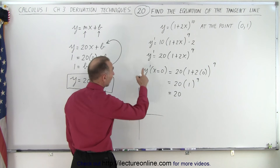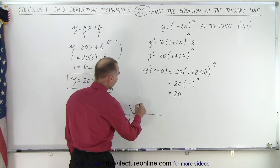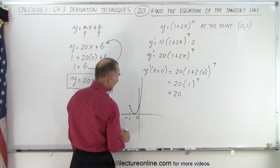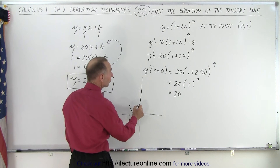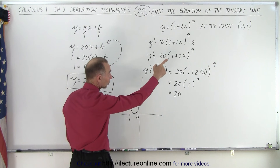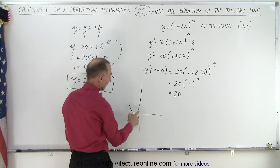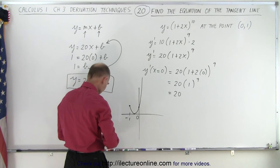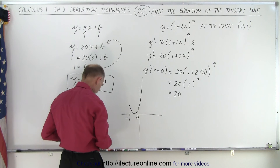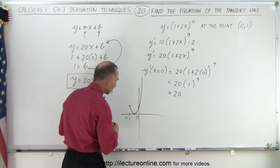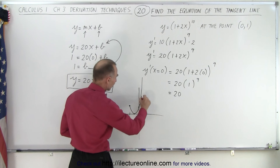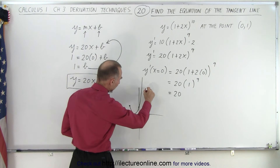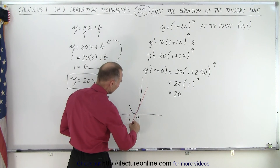So the function looks like this. And you can see that as x gets bigger, the slope gets very quickly very steep. Notice that we're looking for a line that is tangent to the function at x equals 0. I'll go ahead and try to draw that in red — so at this point, we want to find a tangent line, so it kind of looks like that.